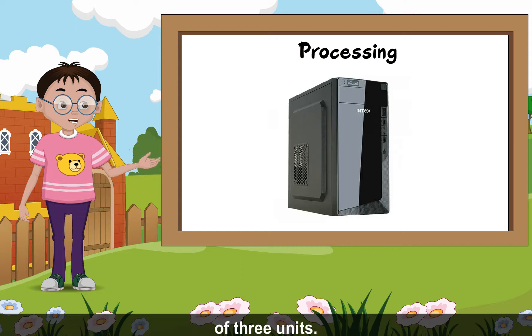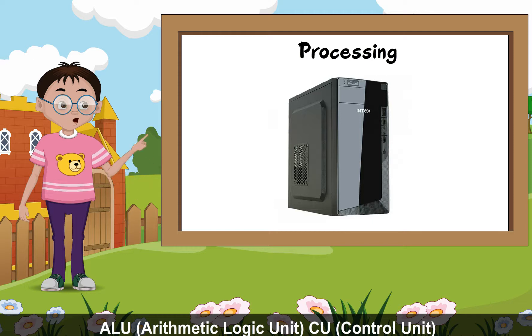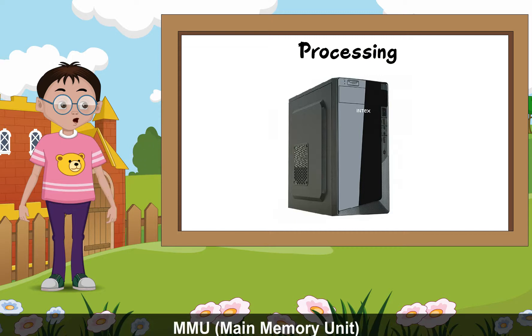The CPU consists of three units: ALU or arithmetic logic unit, CU or control unit, MMU or main memory unit.